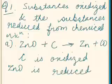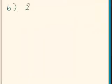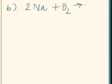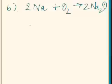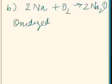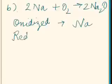Our second chemical reaction is sodium reacting with oxygen, producing Na₂O. In this chemical reaction the substance which is getting oxidized is sodium, as it is converting into Na₂O. So the oxidized substance is sodium.